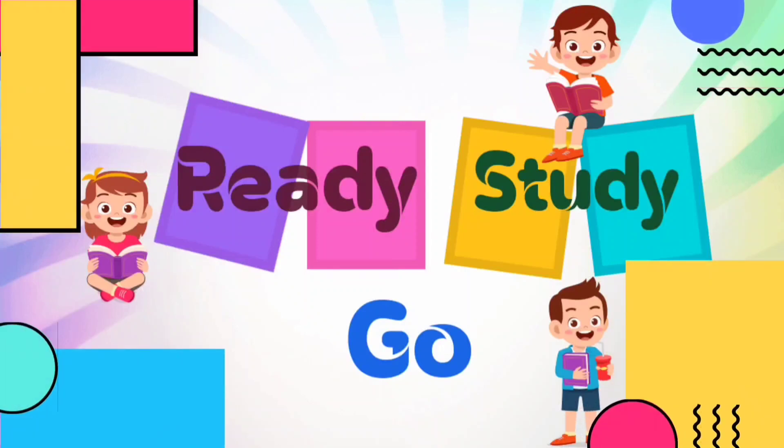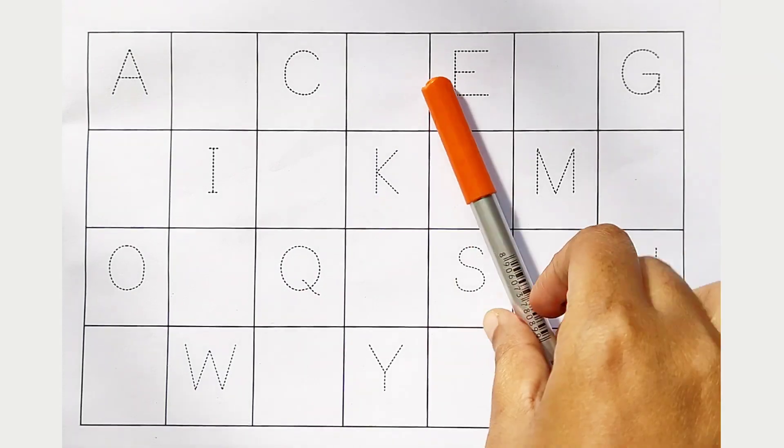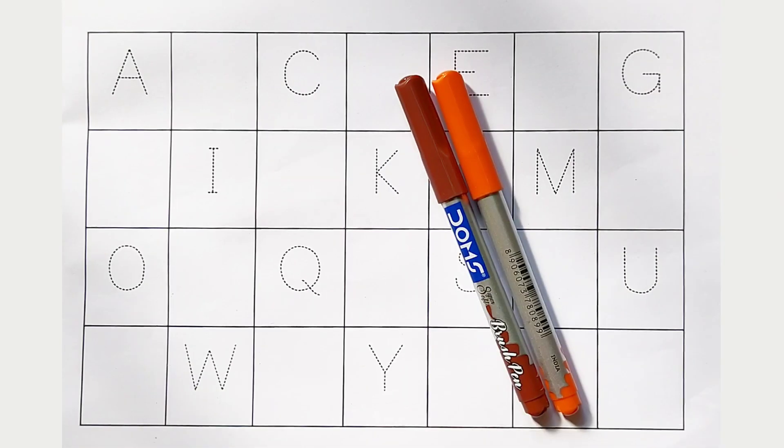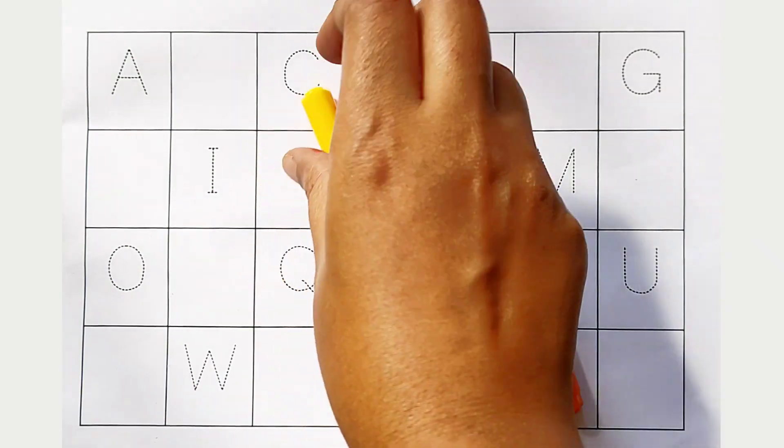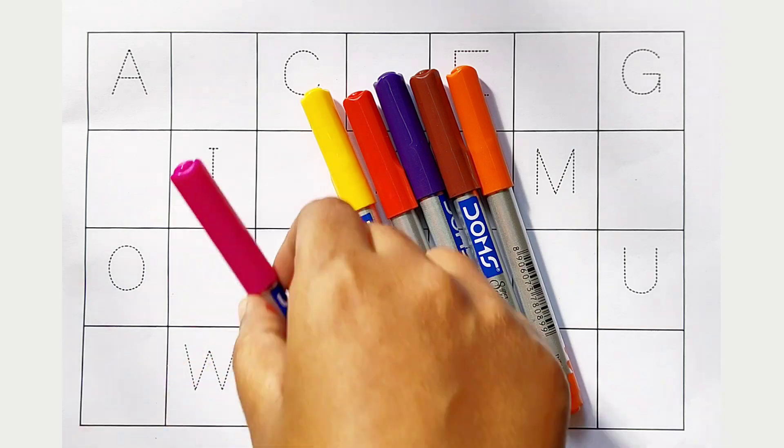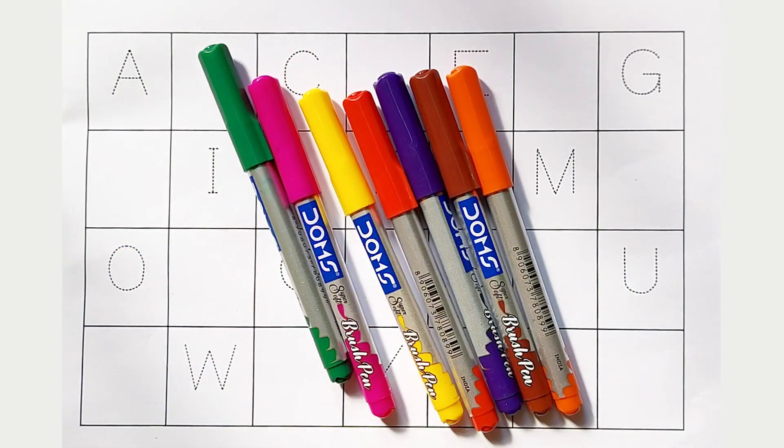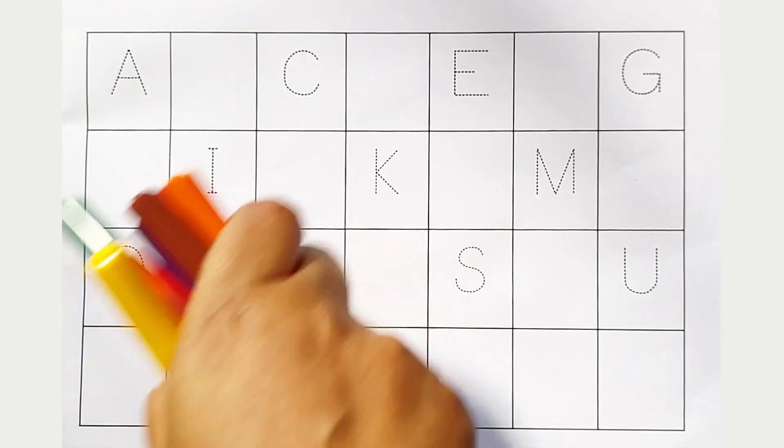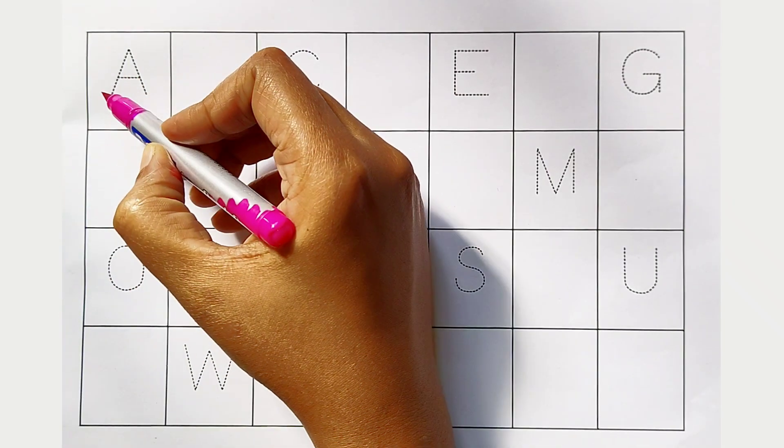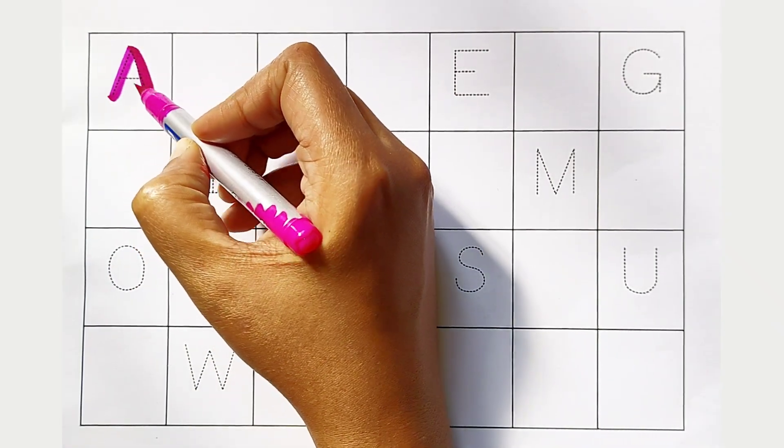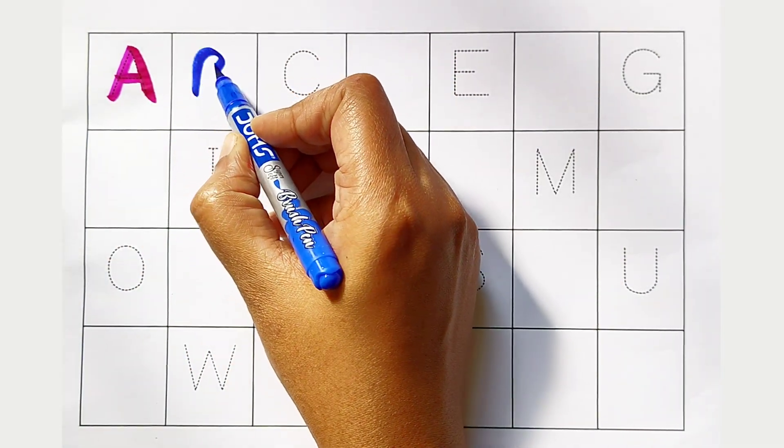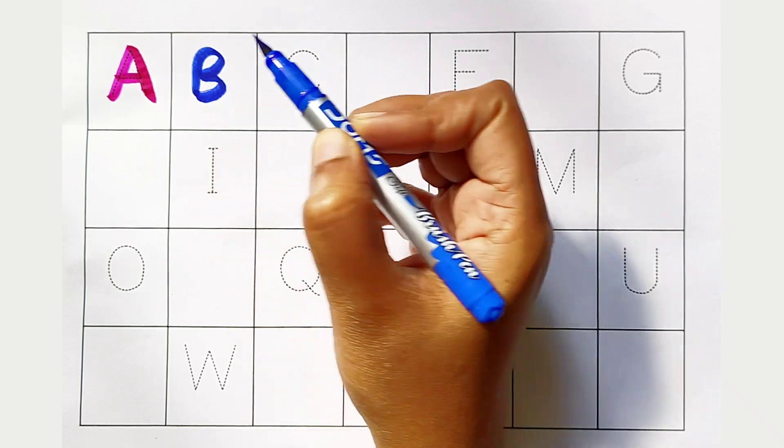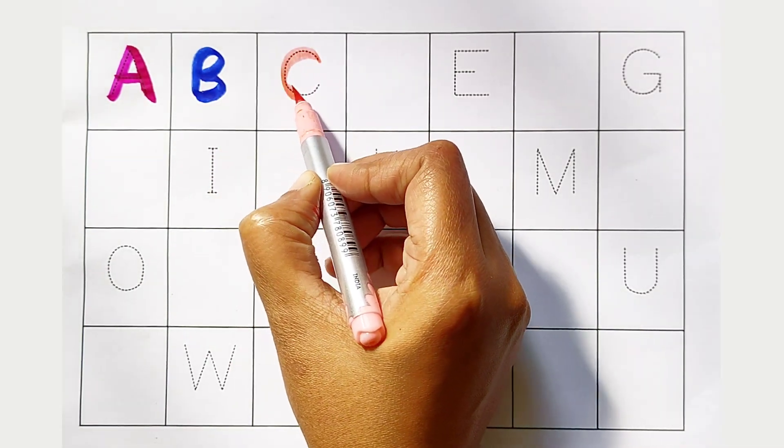Ready, study, go! Orange color, brown color, violet color, red color, yellow color, pink color, green color. Hi kids, today we can learn the alphabets from A to Z. A - dark pink color. B - dark blue color. C - light pink color.